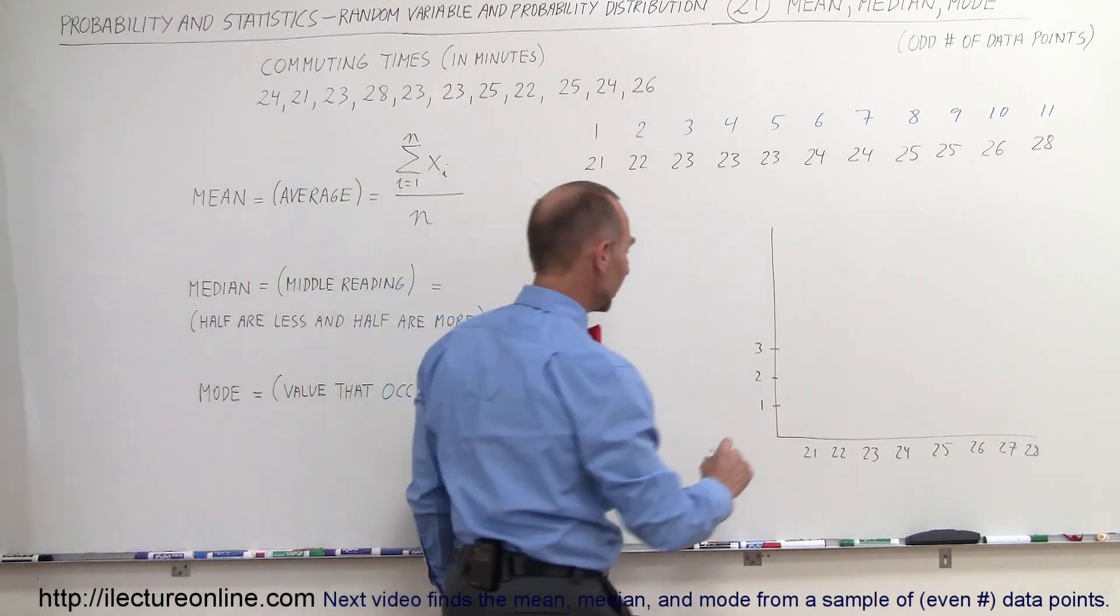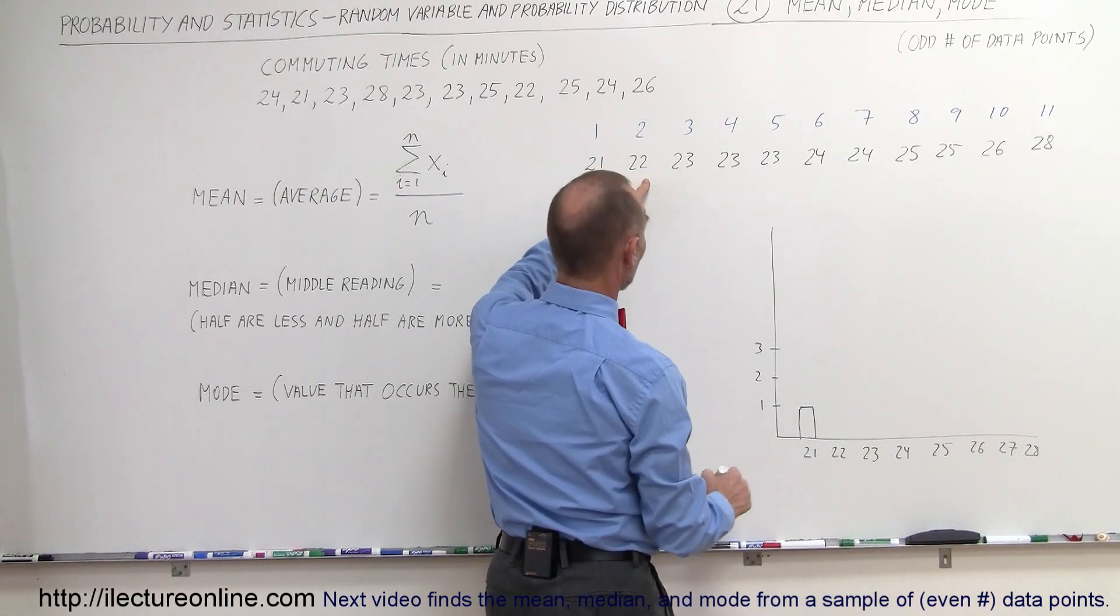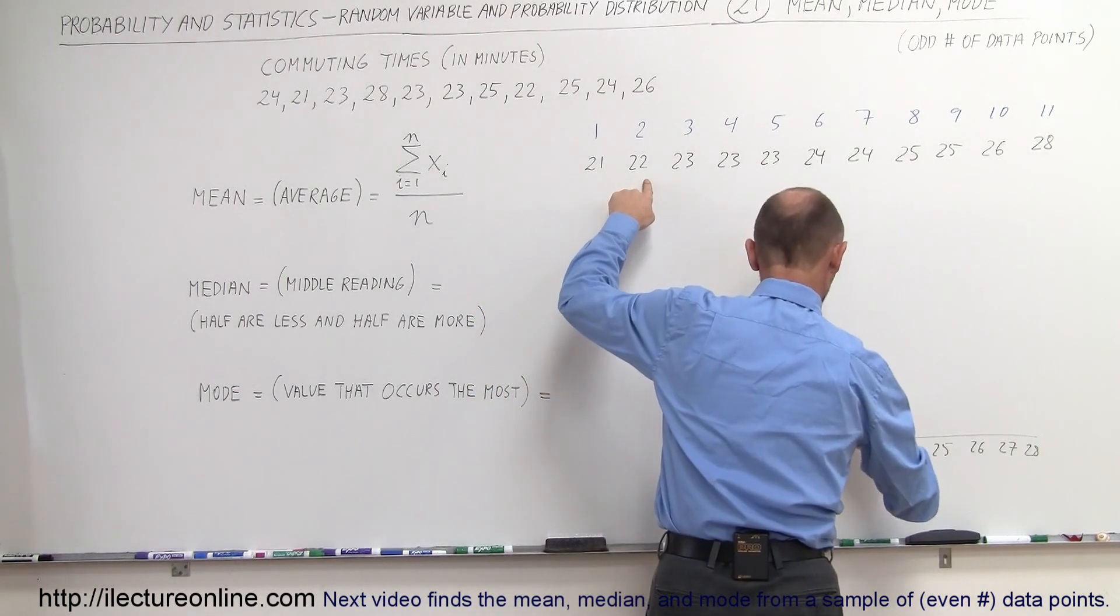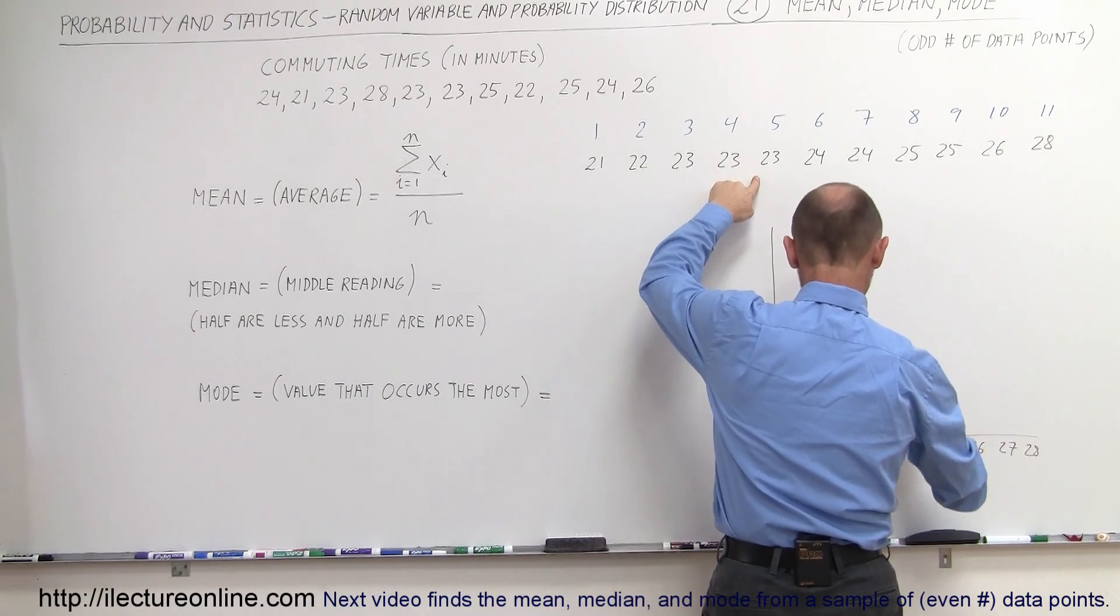So for 21, I only have one occurrence, I'll draw a bar of this height. For 22, I have one occurrence, so I'll draw a bar of this height. For 23, there's three occurrences, draw a bar of this height.